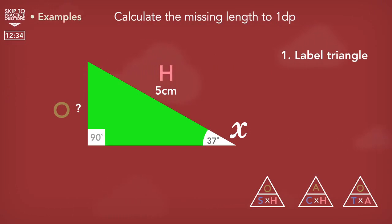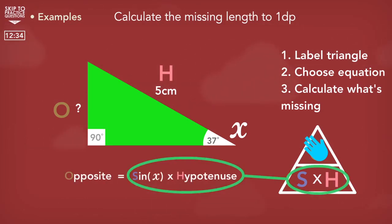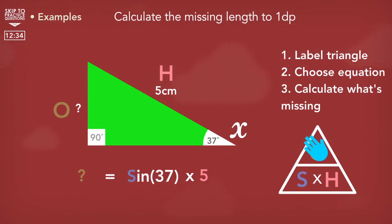So checking the three trig equations from SOHCAHTOA, we have sine, which is the one that we're going to use as it has the hypotenuse and we are looking for the opposite. How we use the triangle to help us find the length of the opposite side is by first covering up the opposite. Then what is left reveals the calculation that we need to use. The opposite side will equal sine 37 multiplied by the hypotenuse five.